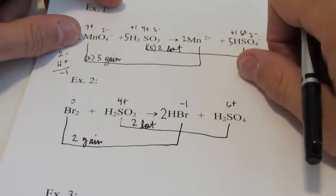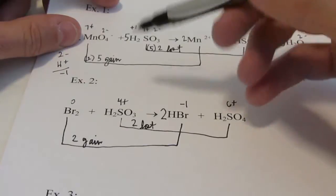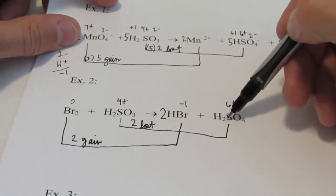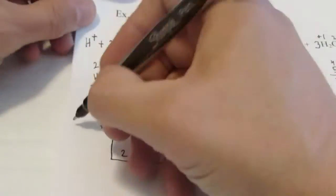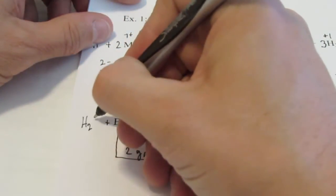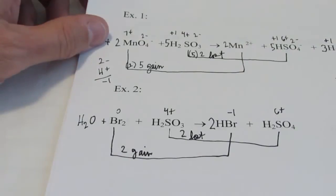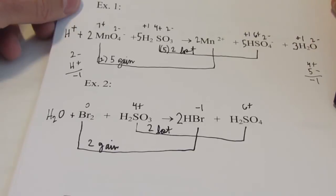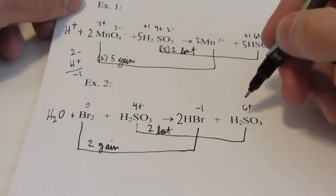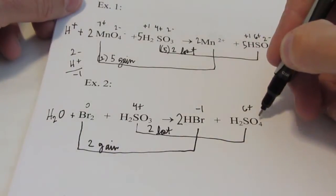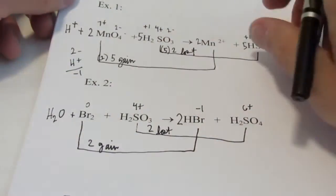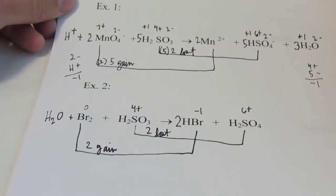Step four: balance all hydrogens using water. I have two hydrogens on that side, two plus two is four — I have to add a water to the reactant side, so H₂O participates in this reaction. Let's check our oxygens. I have four oxygens on this side and three plus one more is four. That equation is balanced.